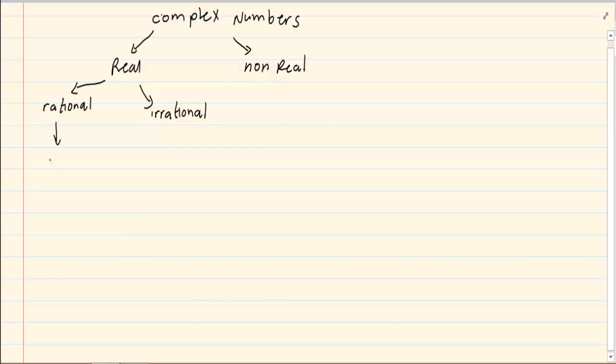Rational is classified as anything that can be written as a over b. Under that we can get fractions, integers, whole numbers, and natural numbers.